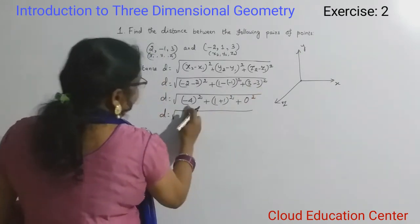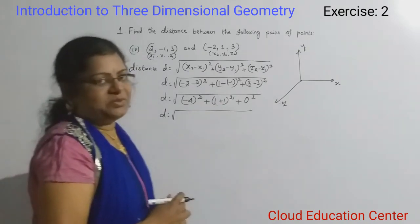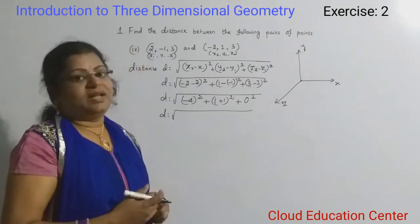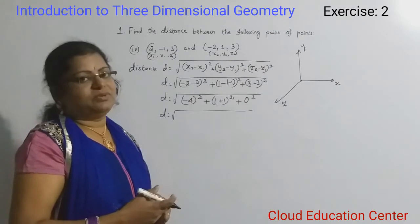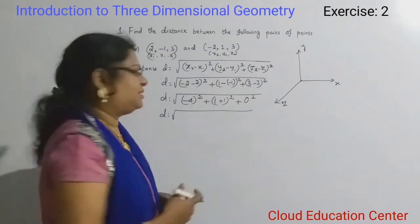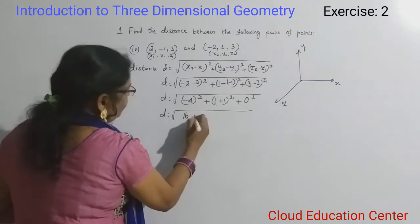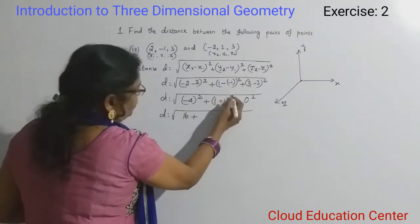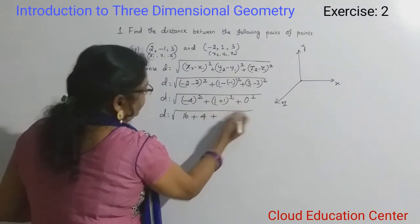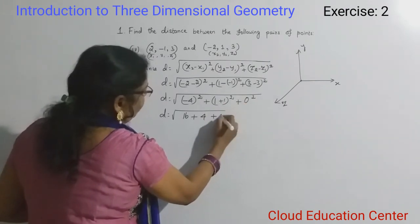D equals square root of minus 4 whole square. When we square a negative value, it becomes positive. So minus times minus is plus. 4 squared is 16, plus 1 plus 1 is 2, and 2 squared is 4. 0 squared is 0.